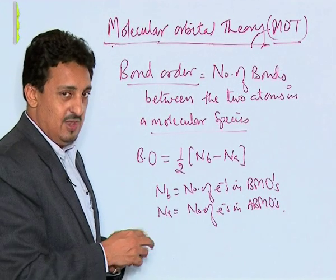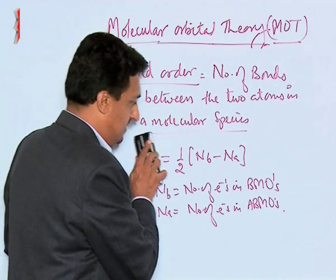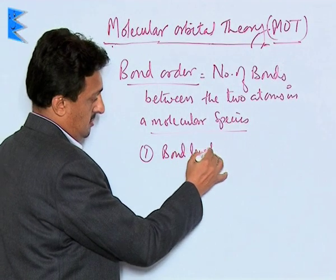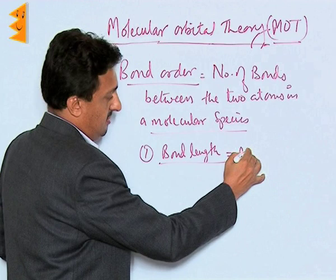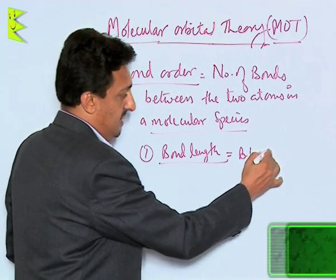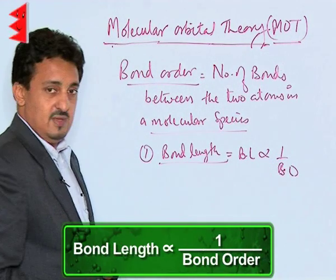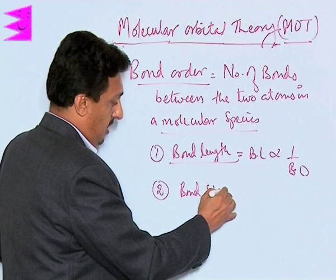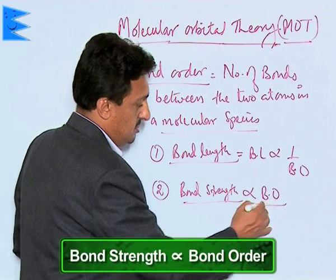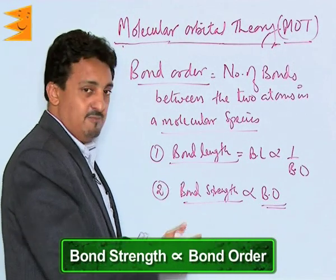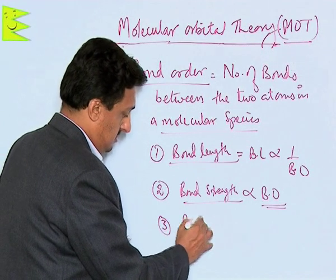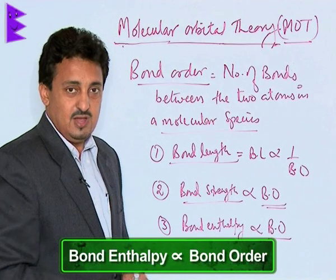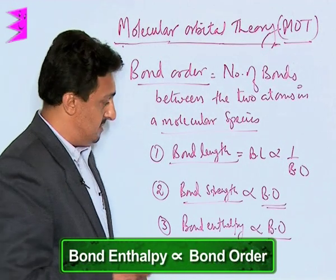Once we know the bond order of a particular molecular species, we can easily predict certain things. Bond length is inversely proportional to bond order — higher the bond order, shorter the bond length. Bond strength is directly proportional to bond order, and bond enthalpy is also directly proportional to bond order — higher the bond order, higher will be the bond enthalpy.